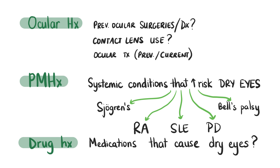In the ocular history you should ask about any previous ocular surgeries or diagnoses, contact lens use, and current or past ocular medications including over-the-counter medications and homeopathic or herbal preparations. When asking about the past medical history, look out for conditions that increase the risk of dry eye like Sjögren's syndrome, rheumatoid arthritis, lupus, and neurological conditions like Parkinson's disease or Bell's palsy.